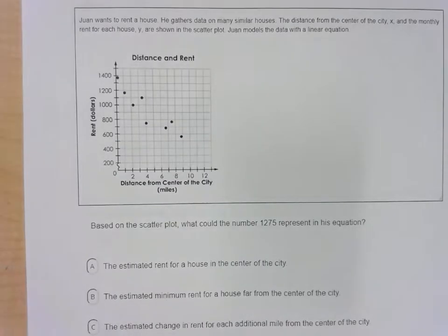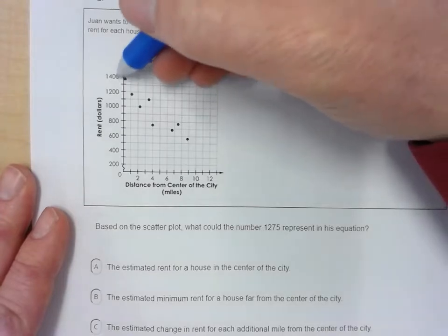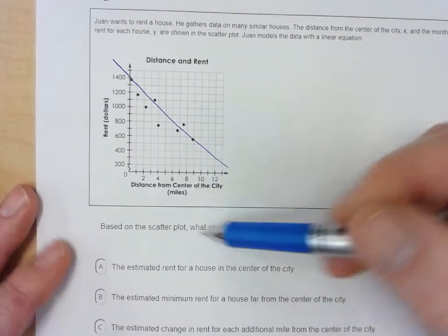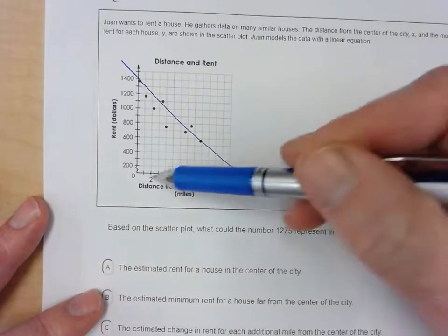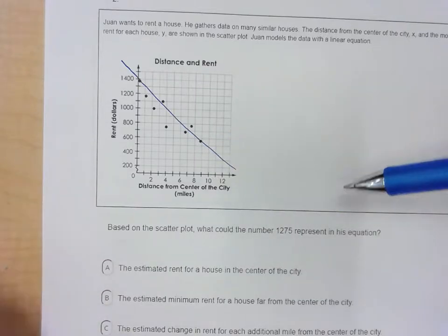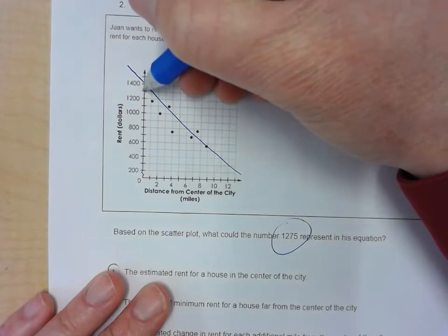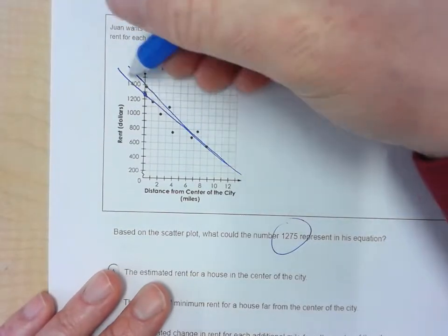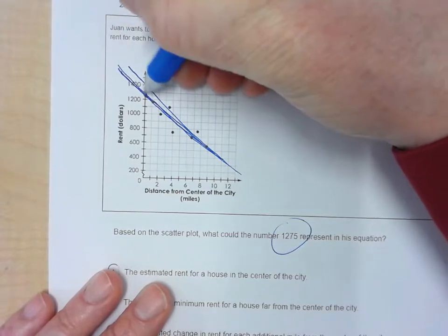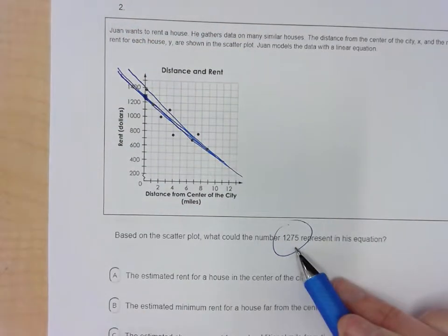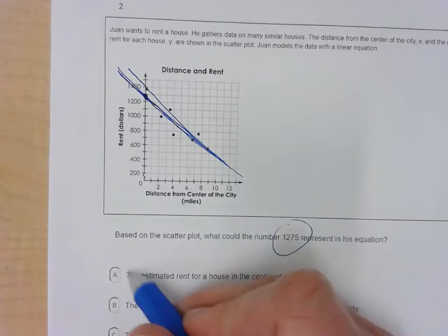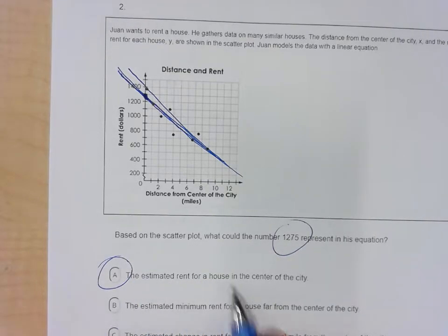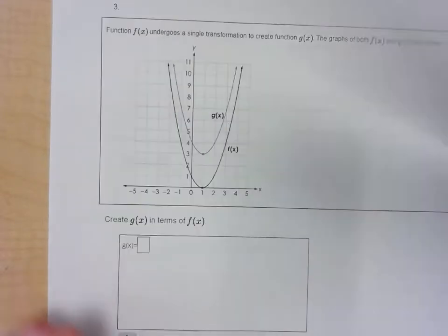Question 2: We're relating in a linear fashion because it pretty much makes a line. The connection is between the rental and the distance from the center of town — if you get farther away, rent goes down. The value 1275 represents the starting point, so no distance from the center of town gives a rent of up to $1,275. That's choice A — it estimates the rent at the center of town.